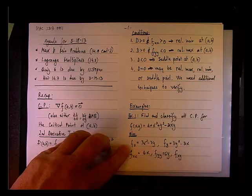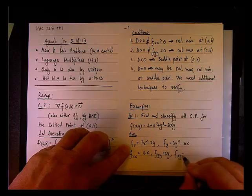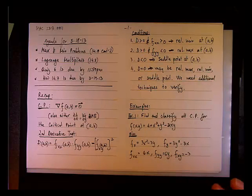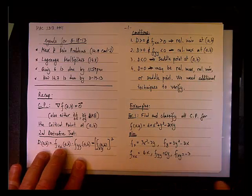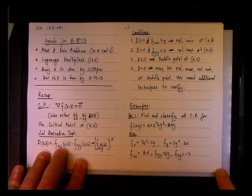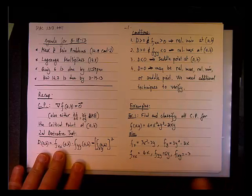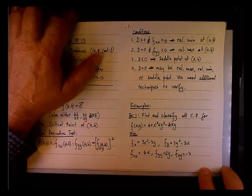So here's f sub x, or ∂f/∂x. You take the derivative with respect to y, you get -3. Here's ∂f/∂y, take the derivative with respect to x, you get -3. And we can see that we know those functions are continuous because they are polynomials.